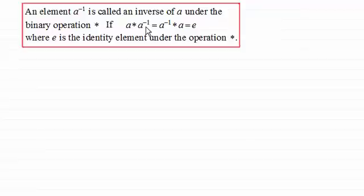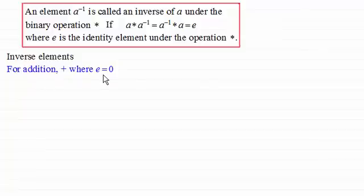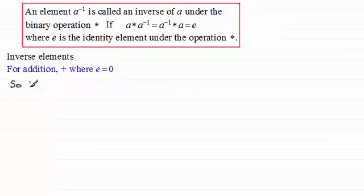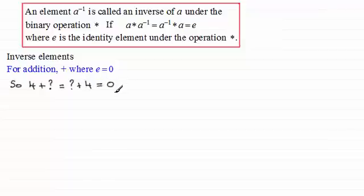You should already be familiar with inverse elements. For example, for addition, remember the identity element was 0 — it left anything unchanged: 3 add 0 would still return 3. So now that we know the identity element, finding the inverse of an element is done like this. If we take 4 and we're looking for its inverse — let's say that inverse is denoted by a question mark — then 4 plus its inverse equals its inverse plus 4, and it must come back to the identity element for addition, which is 0.